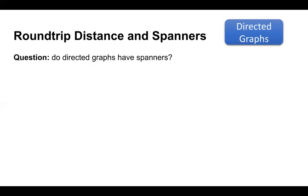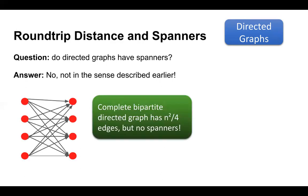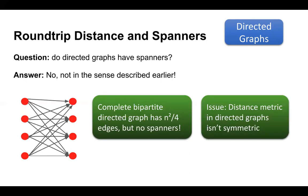Now let's talk about directed graphs. It's natural to wonder: do the techniques from undirected graphs translate at all? Directed graphs don't actually have spanners in the same sense. The main issue can be seen through an example with n/2 vertices on the left and n/2 on the right, with all directed edges going left to right — n²/4 edges — and deleting any edge changes its distance from 1 to infinity. The core issue is that the distance metric in directed graphs isn't symmetric.